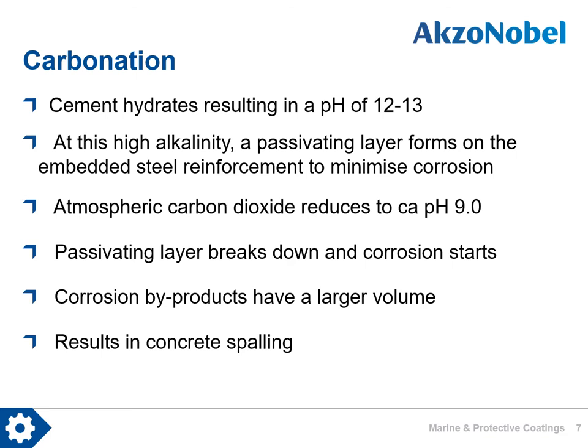We will now describe the process of carbonation. Concrete is an inherently alkaline material. As cement hydrates, it results in a pH of between 12 and 13. At this high alkalinity, a passivating layer forms on the embedded steel reinforcement to minimise corrosion. Atmospheric carbon dioxide gradually penetrates into unprotected concrete, reducing the alkalinity to a pH of circa 9. At this level, the passivating layer breaks down and corrosion starts. Corrosion byproducts, or rust, take up a larger volume than the original steel, ultimately resulting in spalling of the concrete. This is the process of carbonation.